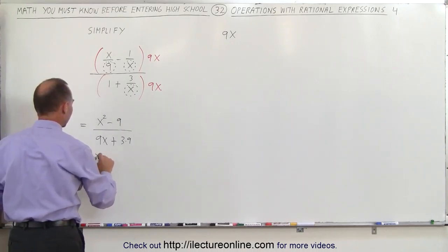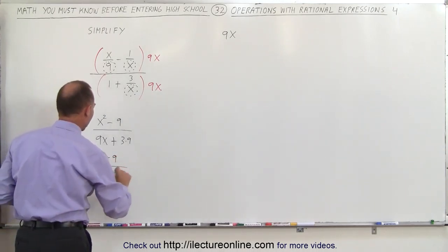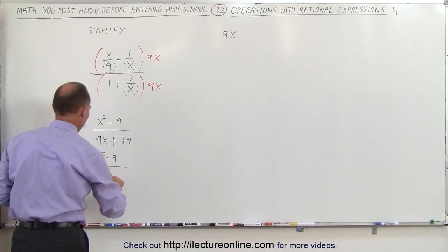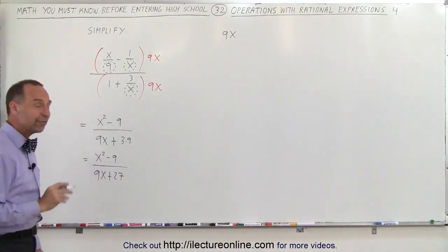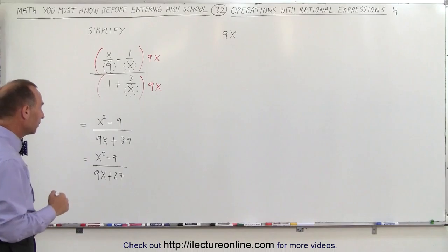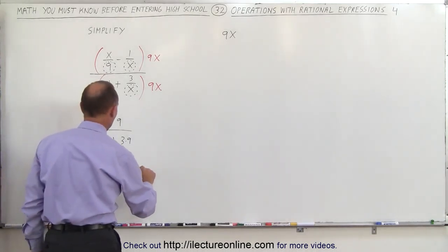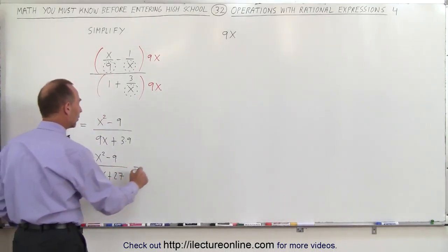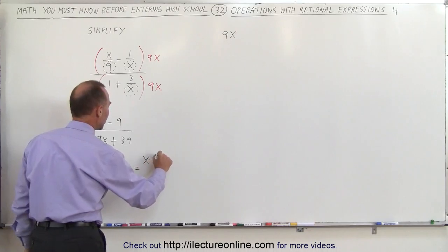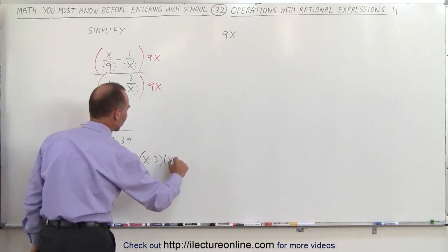If you simplify this, this is equal to x squared minus 9 divided by 9x plus 27. Now we can factor both the numerator and the denominator. In the numerator, we end up with, since this is a difference of squares, we end up with x minus 3 times x plus 3.